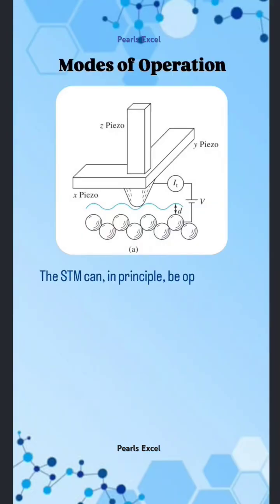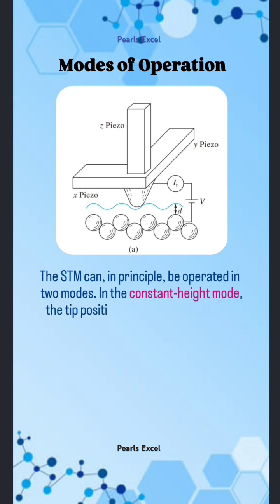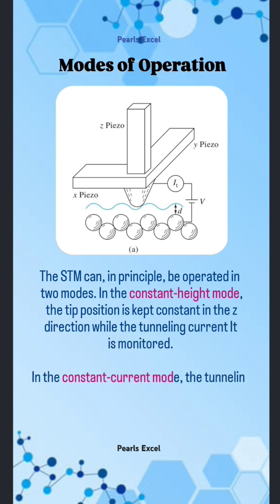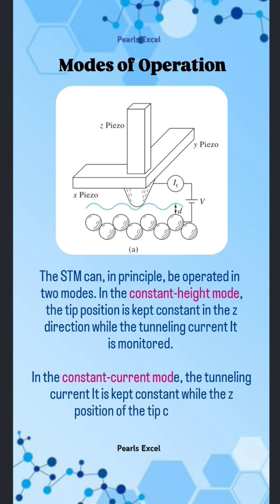Modes of operation: The STM can, in principle, be operated in two modes. In the constant height mode, the tip position is kept constant in the Z direction while the tunneling current is monitored. In the constant current mode, the tunneling current is kept constant while the Z position of the tip changes to maintain a constant current, as shown in the figure.